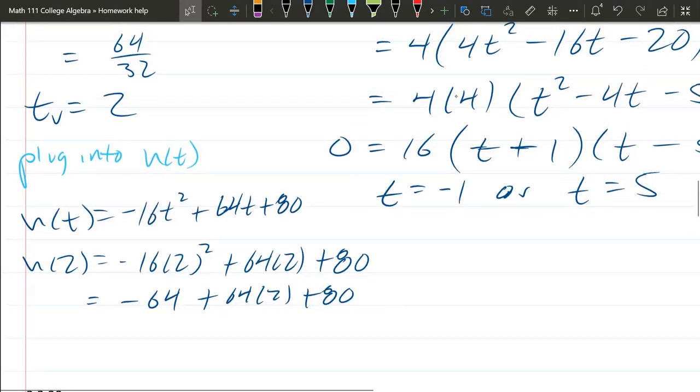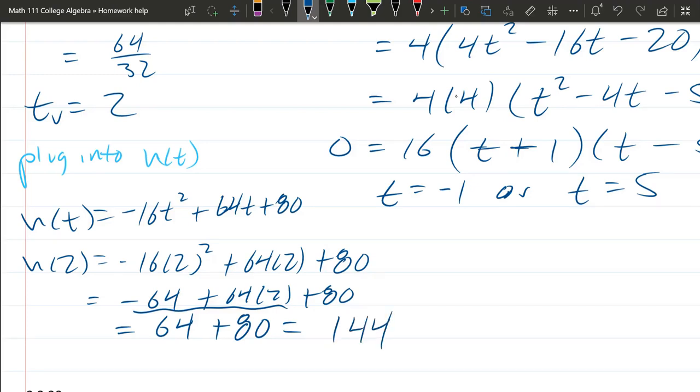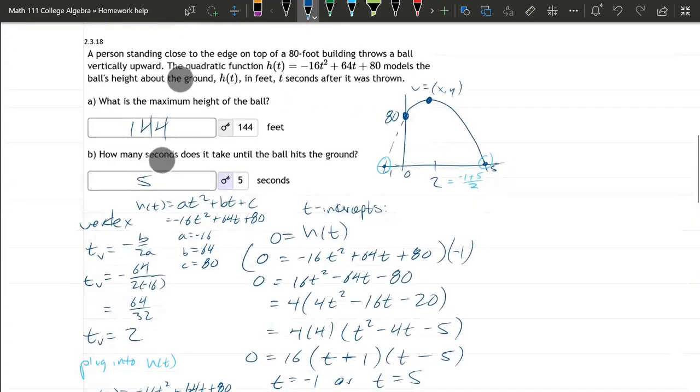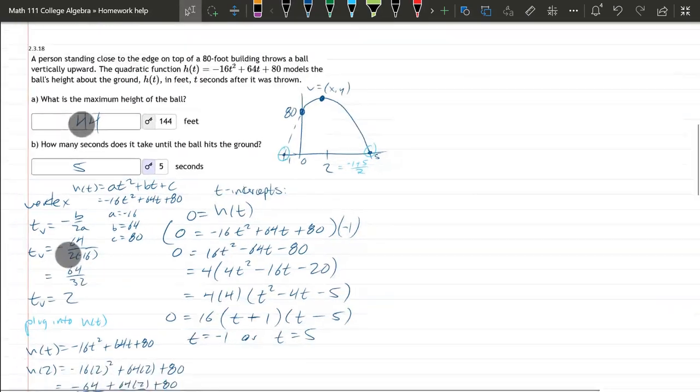So we have negative 64 plus 64 times 2 is positive 64. That just combines those first two together. Plus 80 is 100 something. 144. And that should be right there.